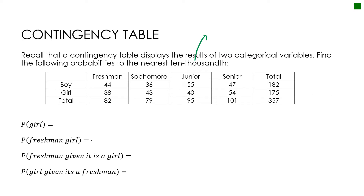Remember that after the decimal place, the first position is the tenths place — there's no ones place. Then comes the hundredths place, the thousandths place, and the ten-thousandths place. So we're looking for four decimal places. Make sure you know what your place values are.